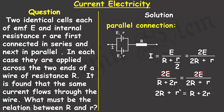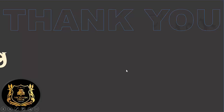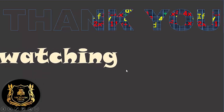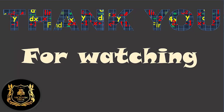Collecting like terms, the equation reduces to capital R equals small r. So the external resistance equals the internal resistance. The relationship between capital R and small r is: capital R equals small r.